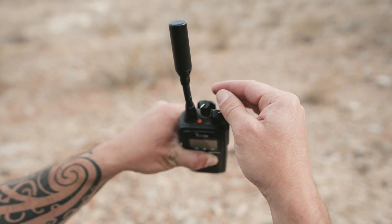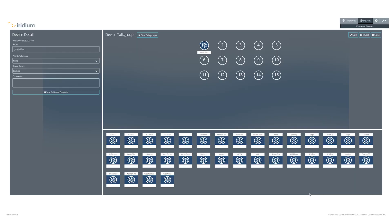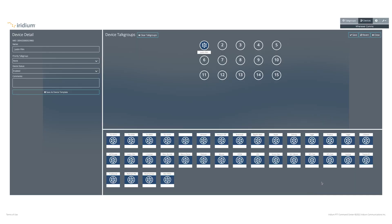These correlate with the channels at the top of the ICOM. If you have multiple talk groups, you can drag and drop them into the numbers above.